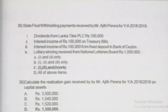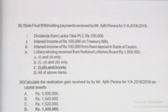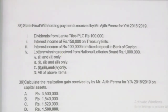Question 38 asks about final withholding payments received by Mr. Ajith. Dividend is a final withholding payment. Interest for an individual person — from treasury bills and fixed deposits — should be taken as final withholding payment. Winning from lotteries is also a final withholding payment. All four items — dividend, treasury bill interest, fixed deposit interest, and lottery winnings — are final withholding payments. The correct answer should be D.